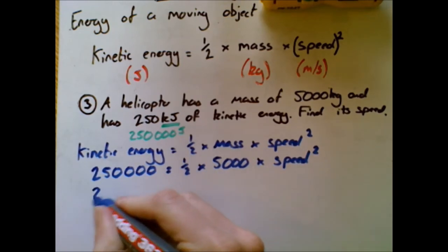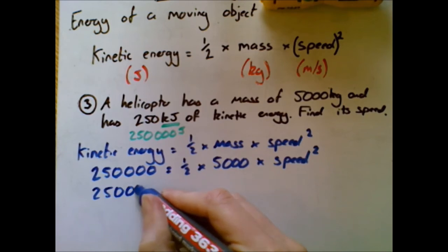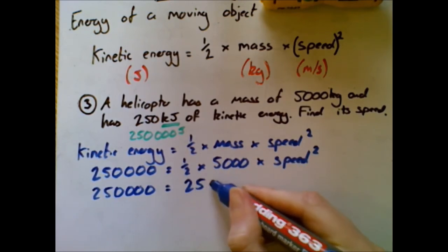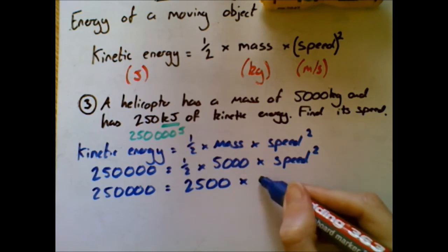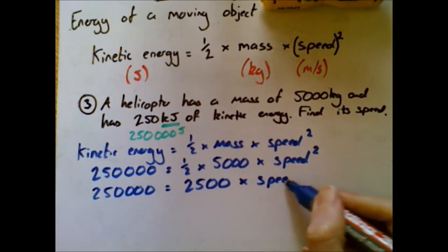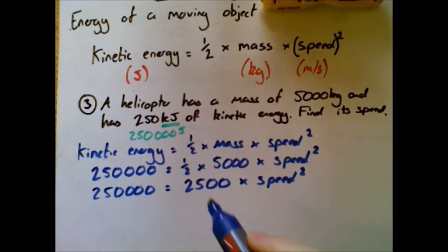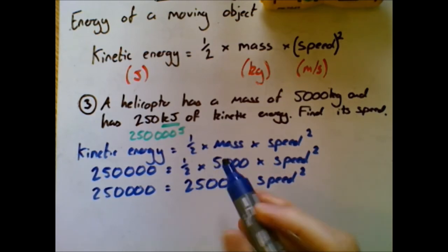Okay, a bit of simplifying to do then. This side stays the same. Half times 5000, well that's 2500. All right, again if you need to pause the video just to check each step, by all means do. But all I've done here look: half times 5000 gives me 2500. Okay, then I'm going to divide both sides by 2500.